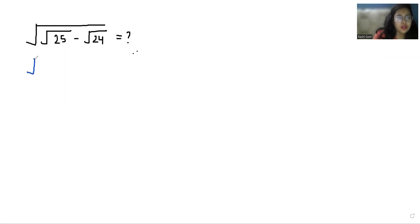Square root under square root 25, we can write it as 5 times 5 minus 24. We can write this as 2 times 2 times 2 times 3. So square root, we can write this as 5 minus and here 2 root 6.